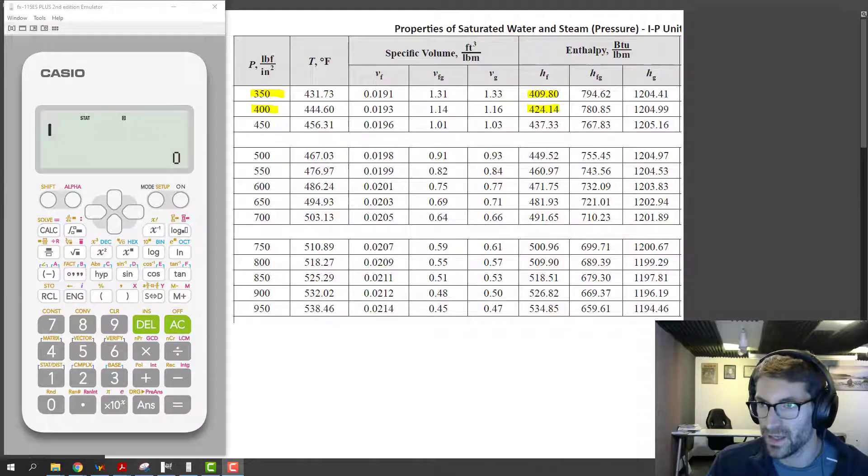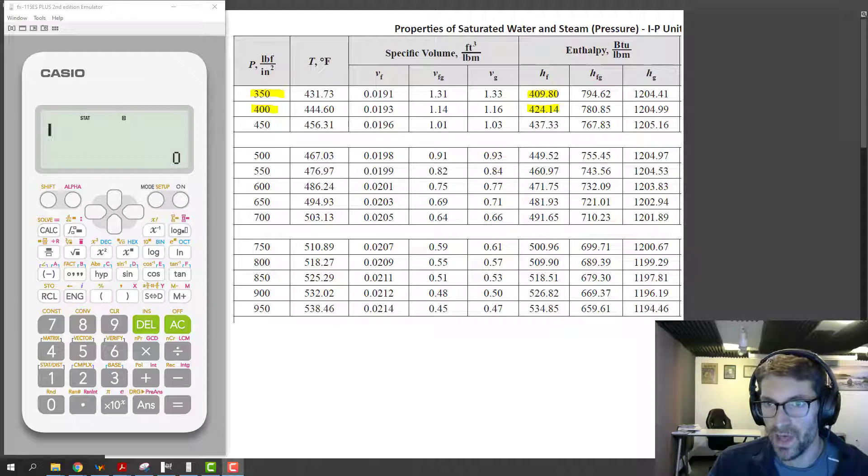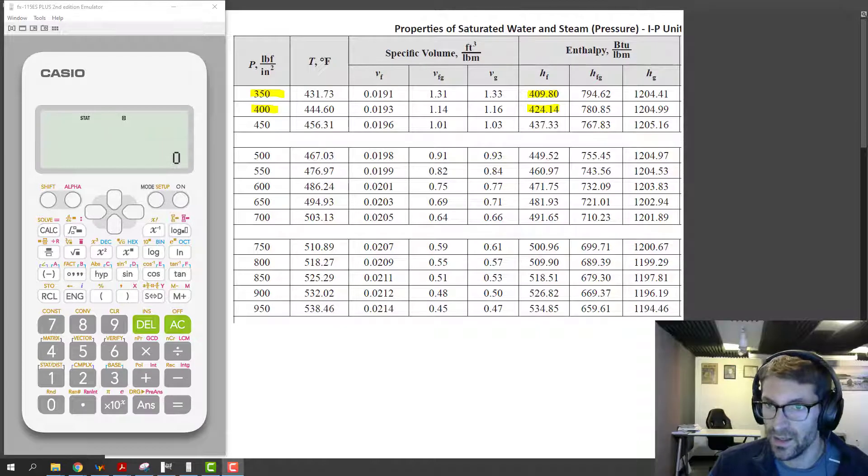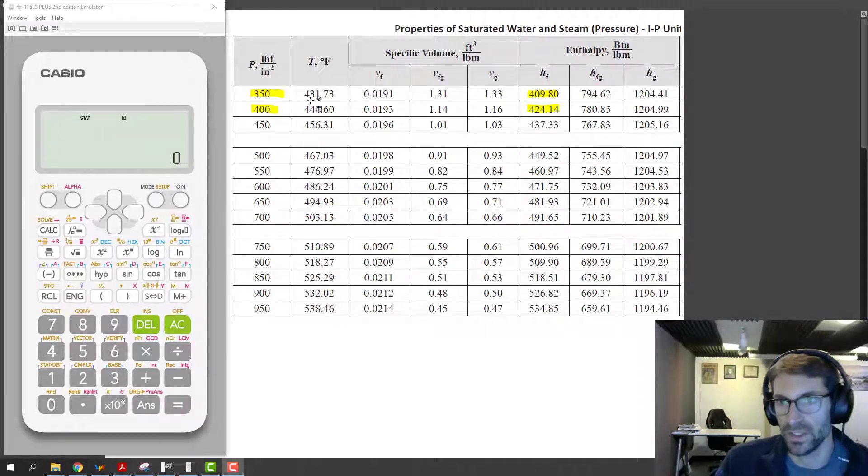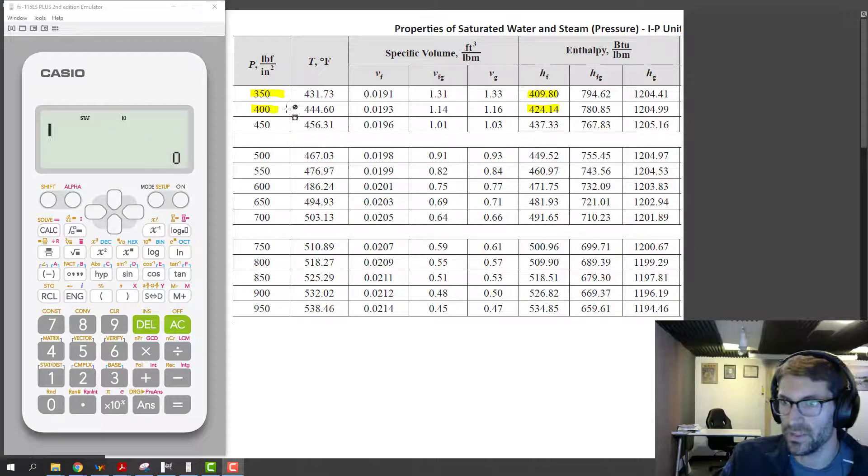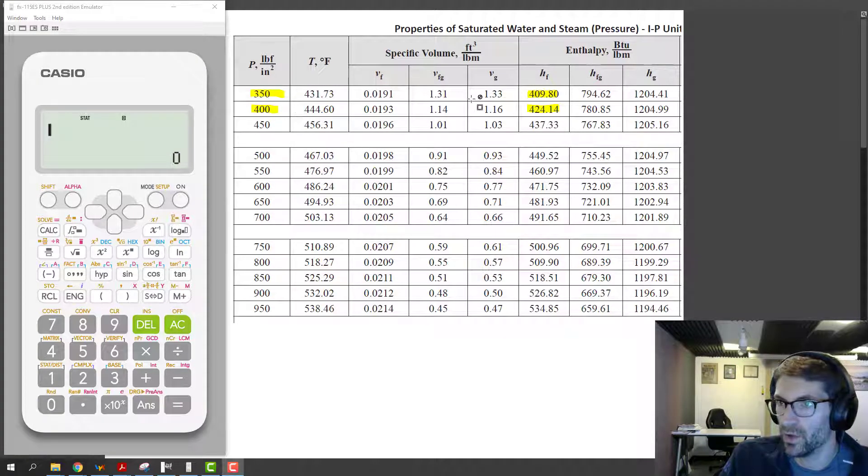So in this case we're looking at a saturated water table, and let's suppose for instance that we have a pressure of 380 psi, so we're kind of halfway between these two numbers 350 and 400, and we want to know what the enthalpy is going to be at 380.